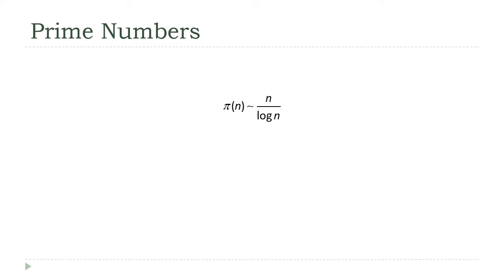On the other hand, we don't know where the actual numbers are. There is no formula that we can use to calculate, for example, the millionth prime number, or even just the next prime number if you've got one to start with.